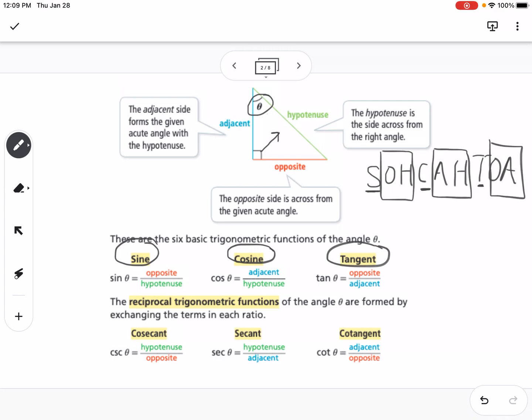Then we have the reciprocal trig functions. With sine, the reciprocal is cosecant. That means you take sine, which is opposite over hypotenuse, and flip it. So it would be hypotenuse over opposite. With cosine, the reciprocal function is secant. With tangent, the reciprocal is cotangent. Those are your six trig functions we're going to be using in this chapter.